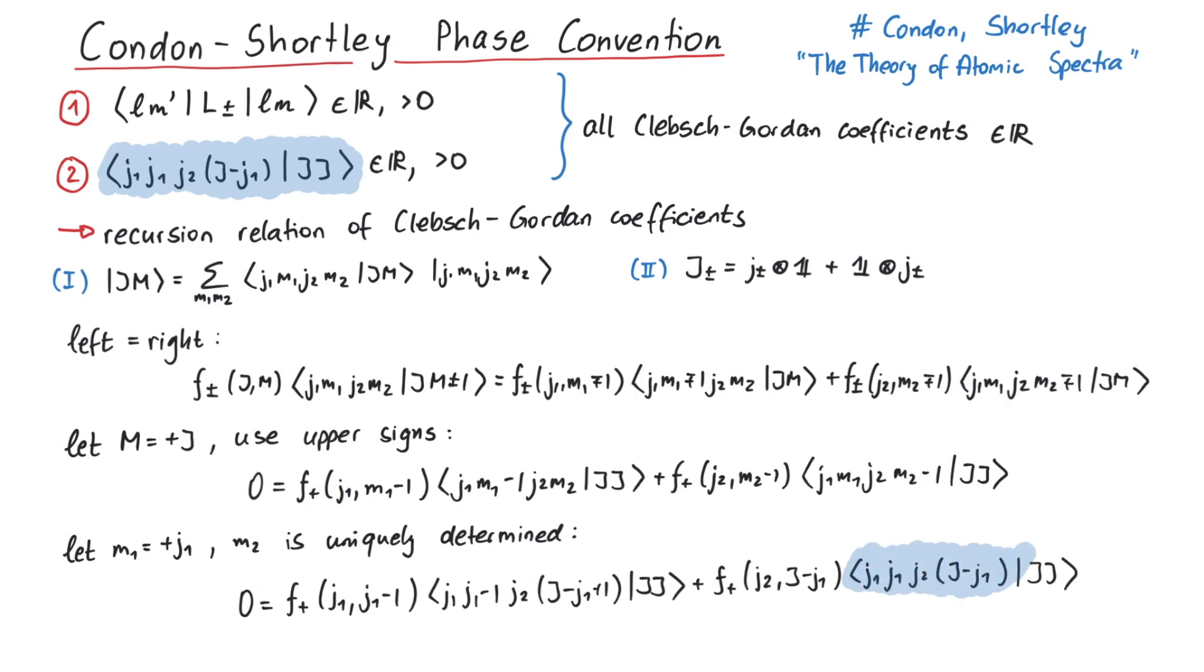This Clebsch-Gordan coefficient here is precisely the one that was mentioned in the Condon-Shortley phase convention. So this one is defined to be real. And in the first part of the video, we also showed that the factor f plus minus is a real number. This means that the remaining Clebsch-Gordan coefficient must also be a real number. And since this is a recursive relation, all other Clebsch-Gordan coefficients must be real numbers.